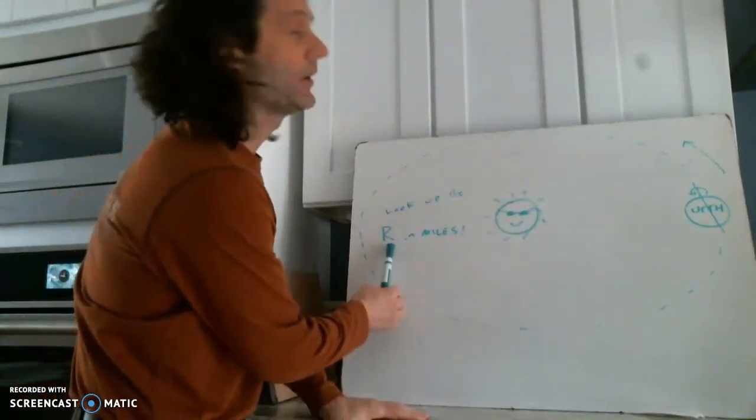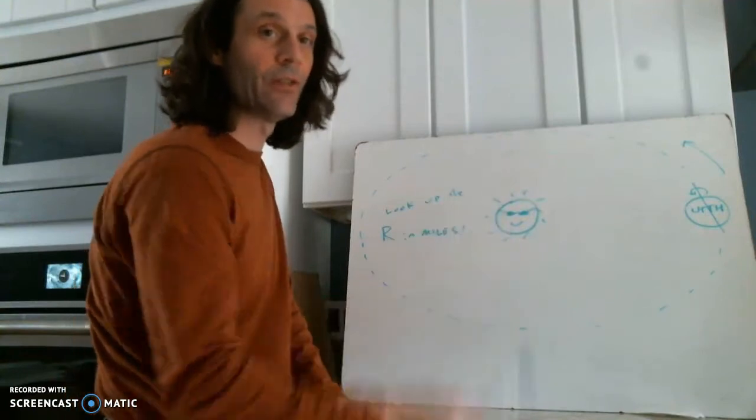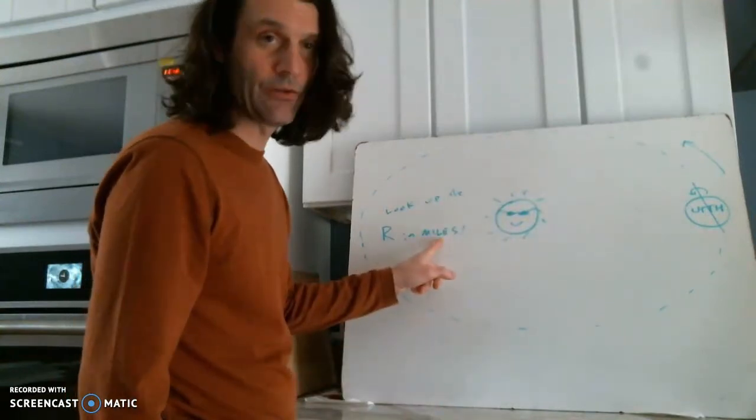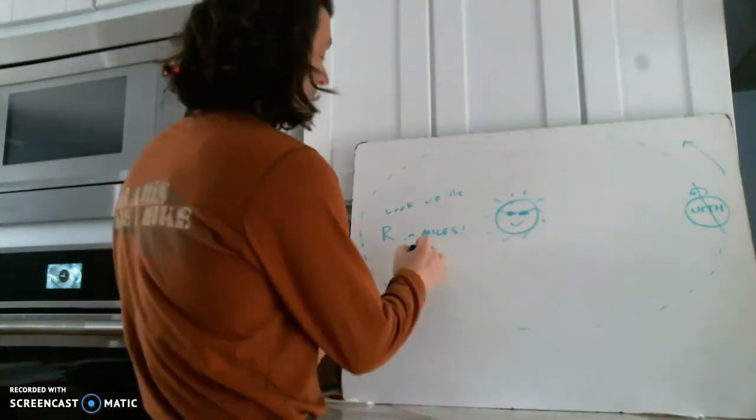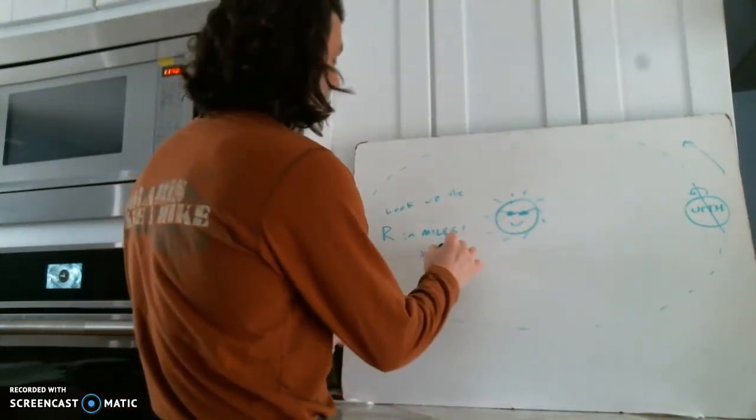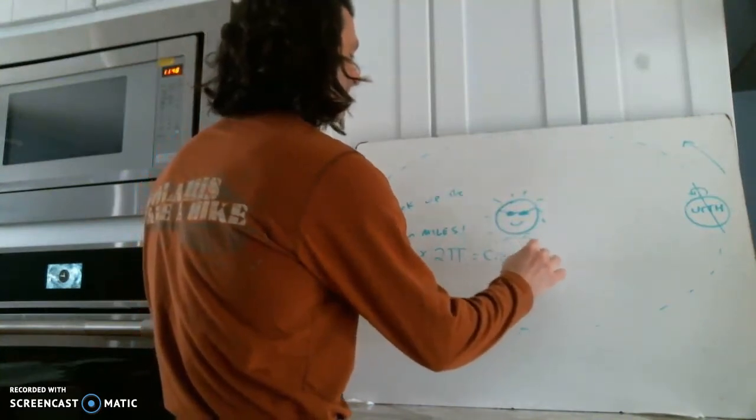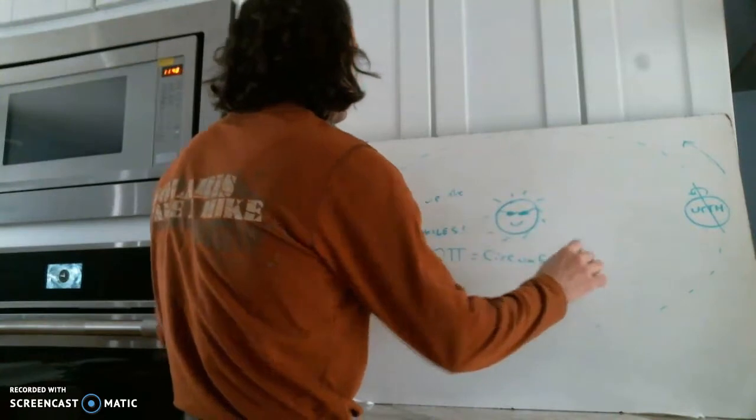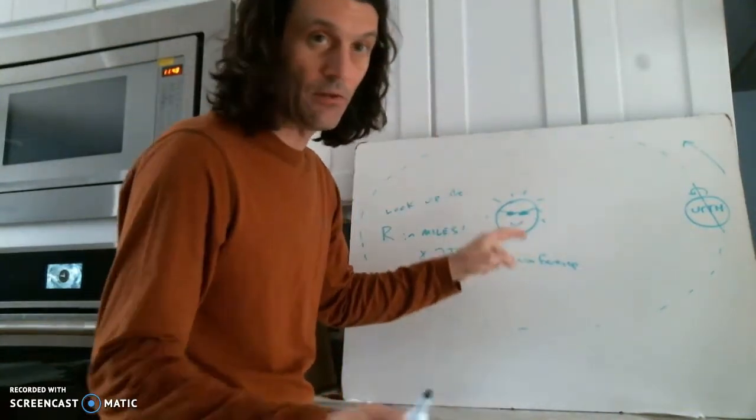In order to do that, you're going to have to look up the radius of the Earth's orbit around the Sun, but make sure it's in miles. Once you have that number, then you're going to multiply it by 2π and that will equal the circumference of the Earth's orbit.